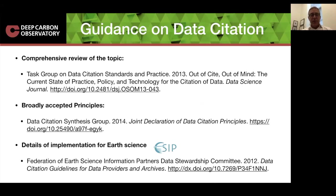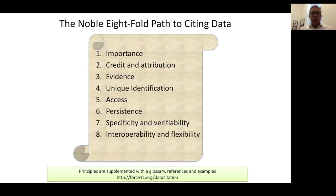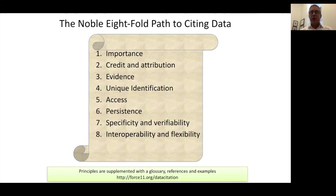And then specifically for Earth Science, the Federation of Earth Science Information Partners has developed some more specific guidelines, and they're meeting next month to revise and update those guidelines. So what is it? These are the noble eightfold path to citing data — the eight jointly declared principles that everybody agrees with. Data citations should reinforce the importance of data, facilitate credit and attribution, provide evidence behind an argument, have some sort of unique identification so you know exactly what's being cited, provide some level of access, be persistent so we can verify the experiment many years later, and be specific and verifiable, and ideally interoperable and flexible so they can work with multiple systems.